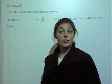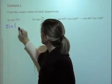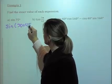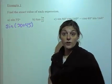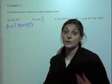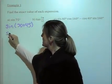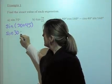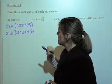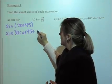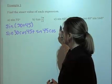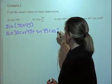We can change the 75 into 30 plus 45, because 30 plus 45 is still 75, and now we can use our sum identity for sine. So we have sine of 30 times cosine of 45 plus sine of 45 times cosine of 30.